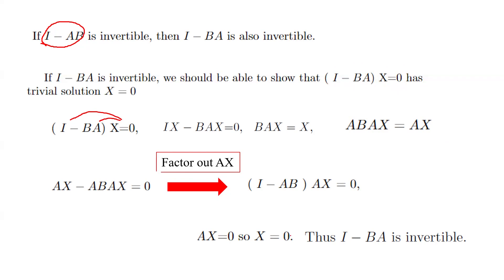Since x equals zero is the only solution, I minus BA is indeed invertible. Some students on the exam wrote down formulas without explaining where they came from — that is not acceptable. We need to use only the properties learned in this course, and unexplained formulas will cost points.